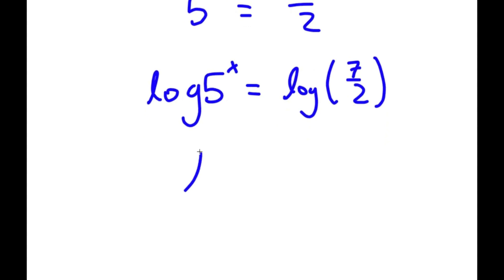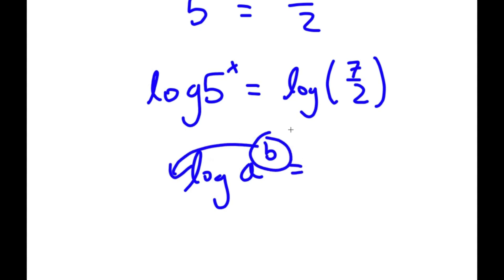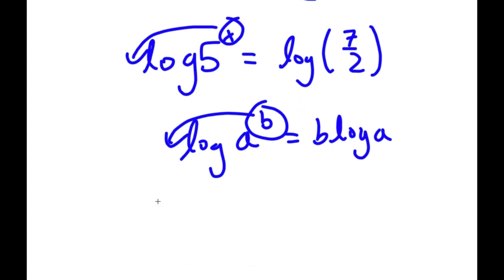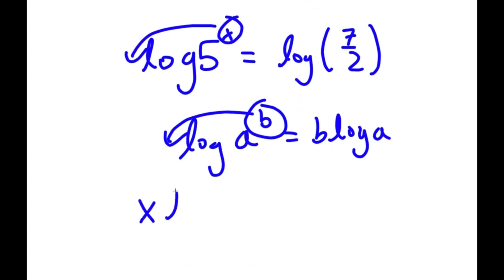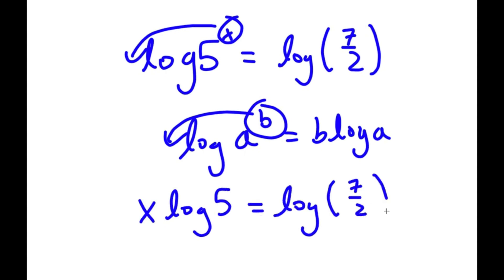If I have something in the form log a to the power of b, I can move my exponent b to the front, so I get b times log a. So in this case, I have log 5 to the power of x, so I can move x to the front, and I get x times log 5 is equal to log 7 over 2.